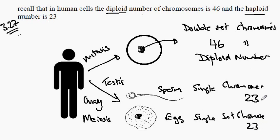This number 23, the single set of chromosomes, is known as the haploid number. The haploid number in humans is 23. The diploid number is 46.